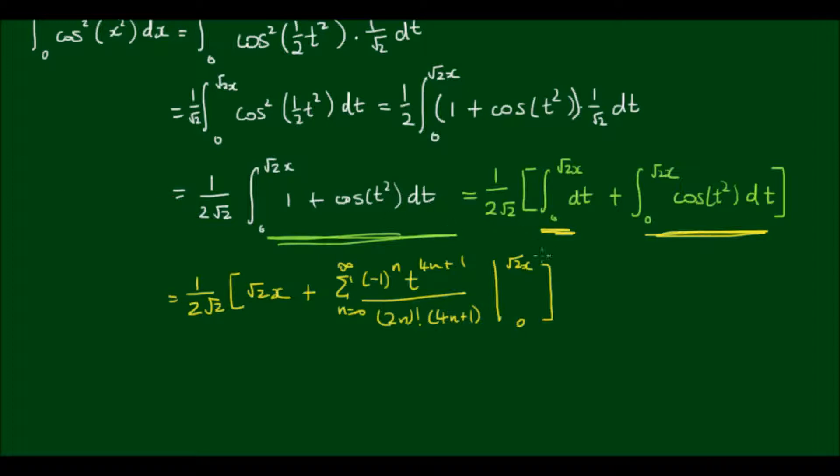And we've discussed before in my previous video that the lower bound of 0 is equal to 0, so it's eliminated and we simply substitute this root 2x into t. So our final answer should be 1 on 2 root 2 outside of root 2x plus the sum from n equals 0 to infinity of (-1)^n times (root 2x)^(4n+1) divided by (2n)! times (4n+1).